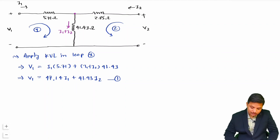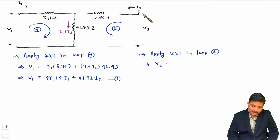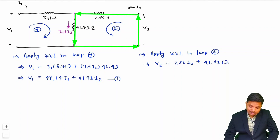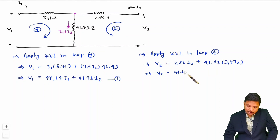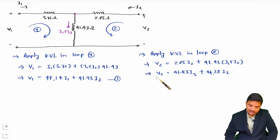Applying KVL in loop 2: V2 = I2×2.85 + (I1+I2)×41.43. Simplifying: V2 = 41.43·I1 + (2.85+41.43)·I2 = 41.43·I1 + 44.28·I2. That is the second equation.